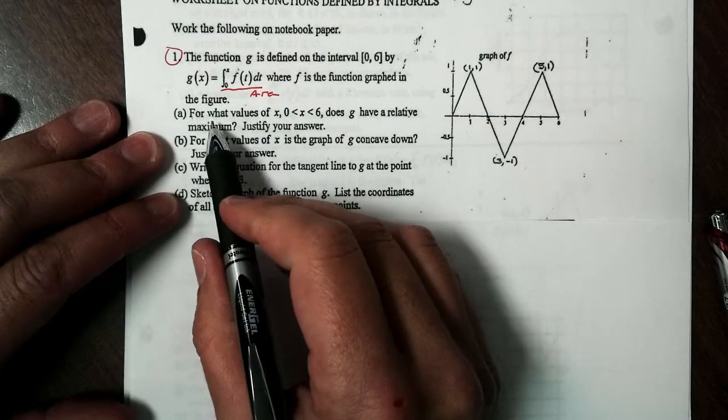All right. For part b, now it asks, for what values of x is the graph of g concave down? So concavity, this is our, we need g double prime, we need our second derivative. Well, we know the first derivative is f, so the second derivative will become f prime of x.